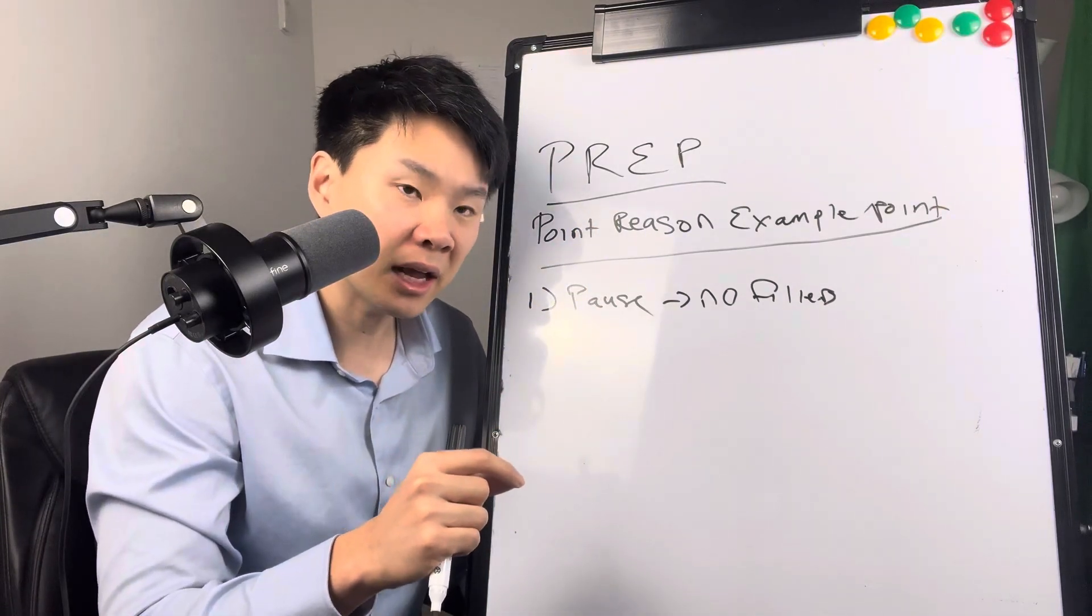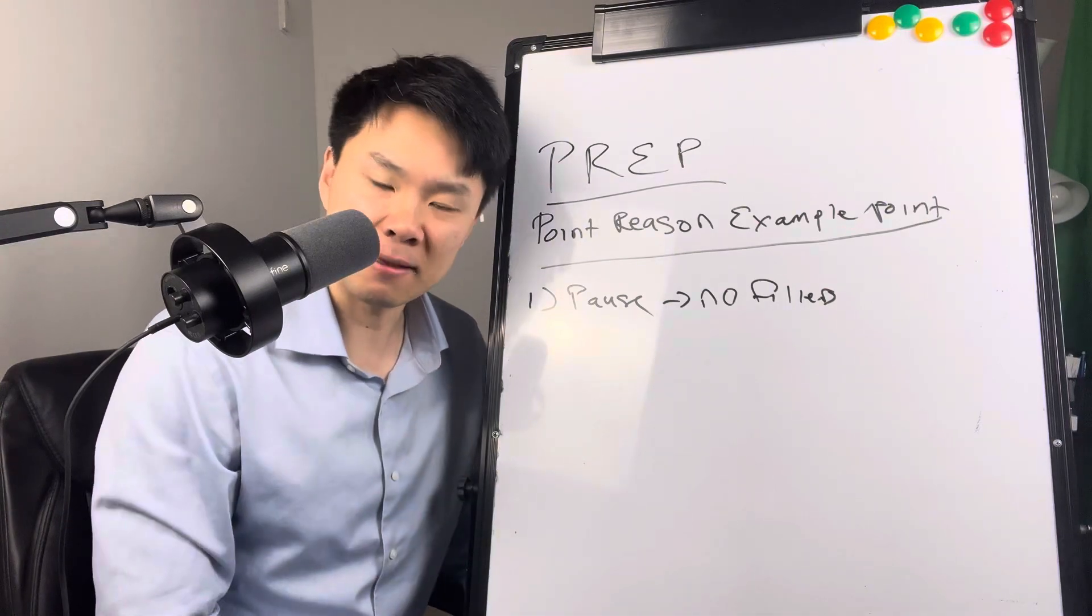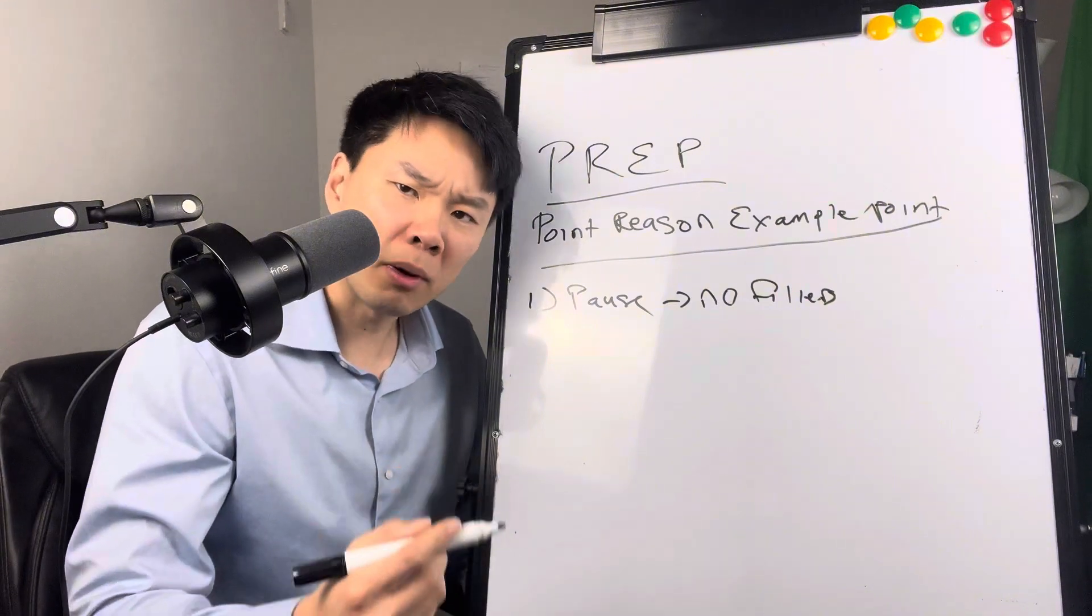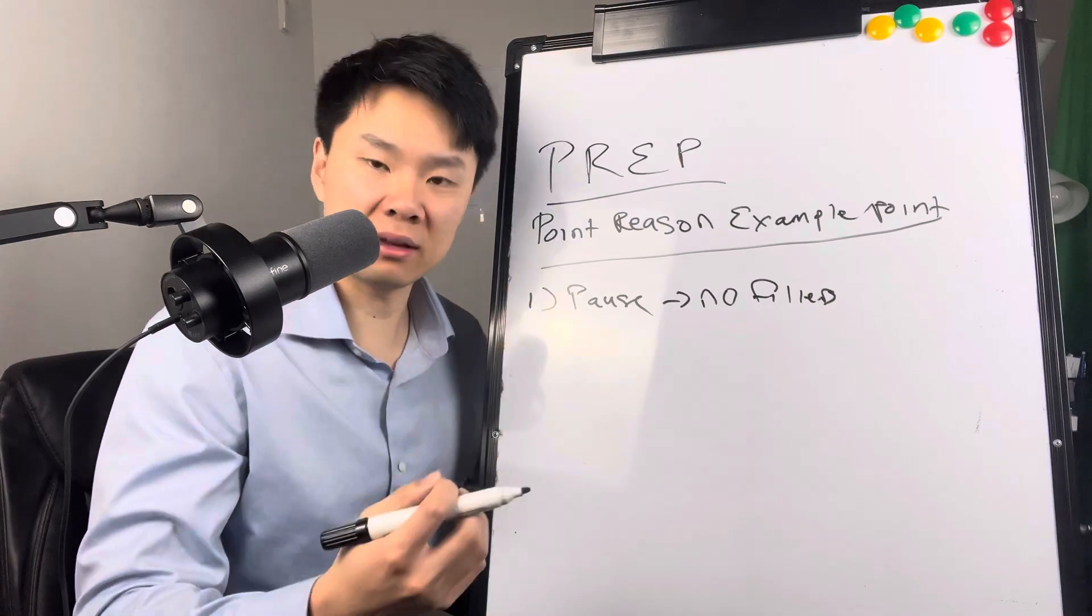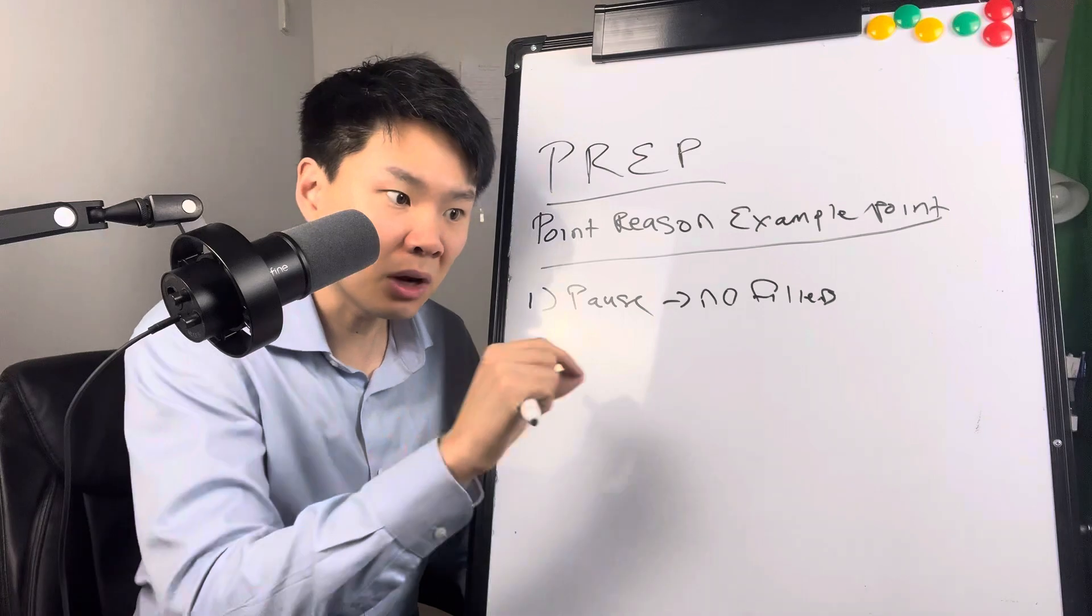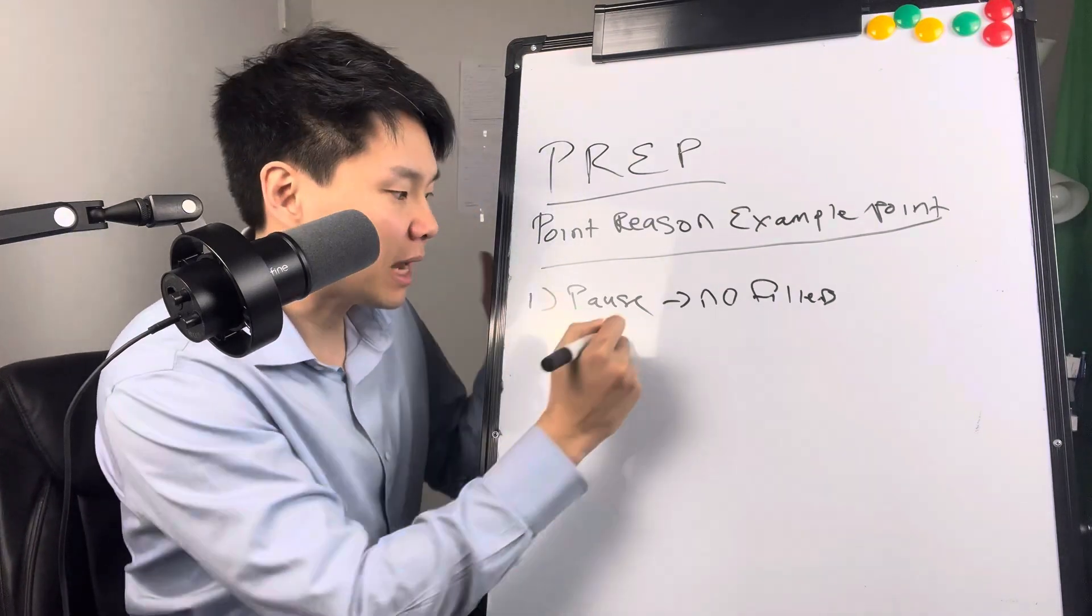And then as you're nodding your head, I want you to paraphrase the question back at them. So you could say, what are our partner priorities this quarter? And you could ask that question rhetorically. But what you're doing is you're buying yourself time to gather your thoughts.